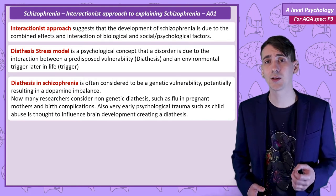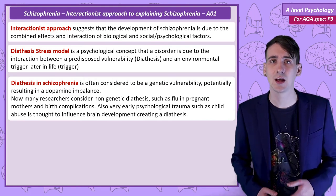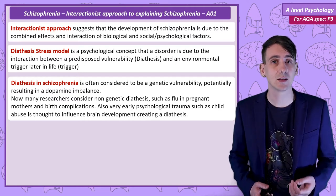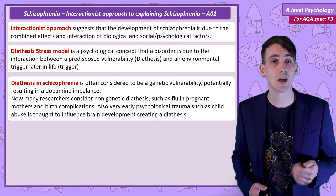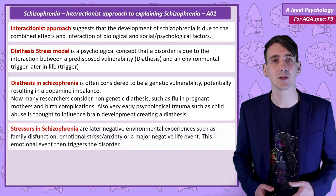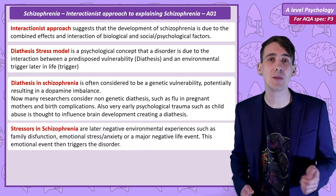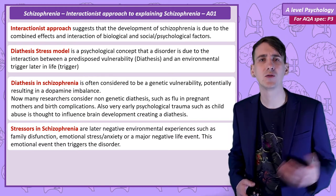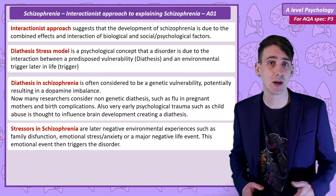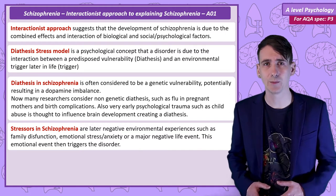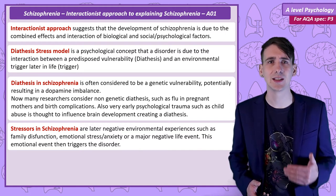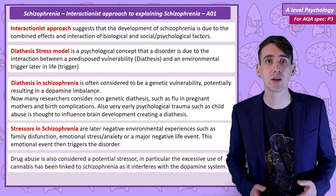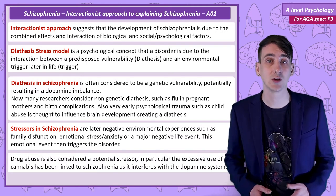Just because someone has a vulnerability — a diathesis — this doesn't mean that they are going to automatically develop schizophrenia. Schizophrenia is thought to be triggered by what's known as a stressor. This stress trigger is a major negative psychological experience, such as a really bad life event, a dysfunctional family relationship like those mentioned in the psychological explanations, or potentially a period of intense stress like academic pressure. Stress triggers can also include drug abuse, such as the use of cannabis.